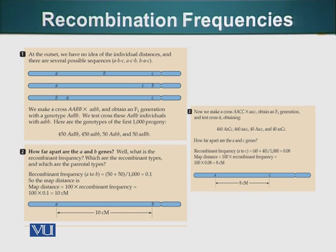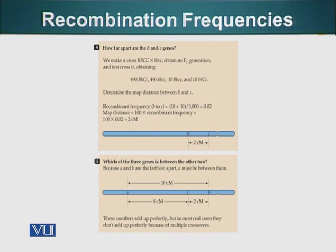So we need to do one more experiment in which we will have to figure out distance between the C and B to complete our genetic map in this case. So let's do that experiment. So how far are B and C genes? We do the same cross, similar type of cross we have done previously.